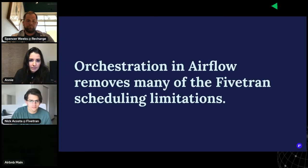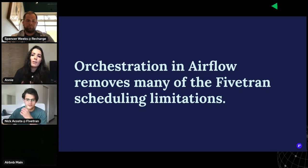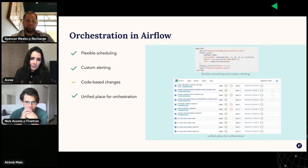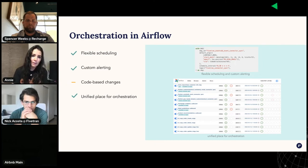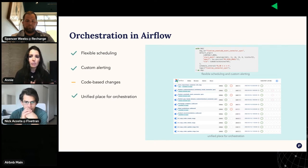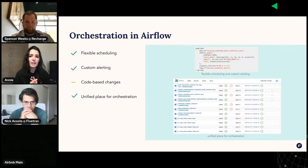The answer for us is Airflow orchestration. Airflow orchestration removes many of the limitations we see when scheduling a connector in Fivetran. First, we've got increased flexibility in our scheduling. In Airflow, the schedule interval DAG argument receives either a cron expression or a timedelta object. We can get more granular and particular for our sync scheduling across our connectors. On the slide here you can see a snippet of the DAG code that we use — we're leveraging a cron expression, which allows for scheduling that is absolute and stateless.